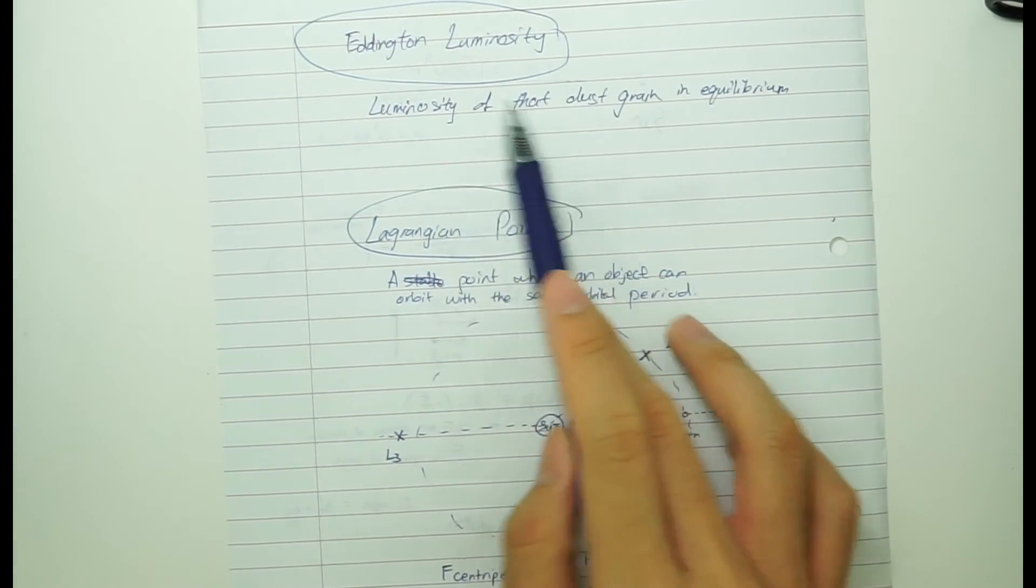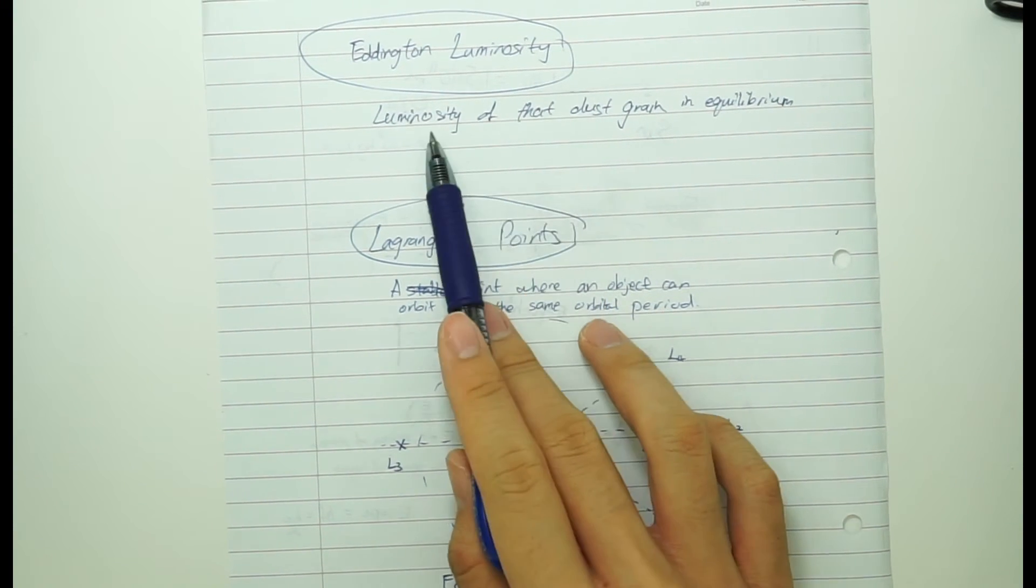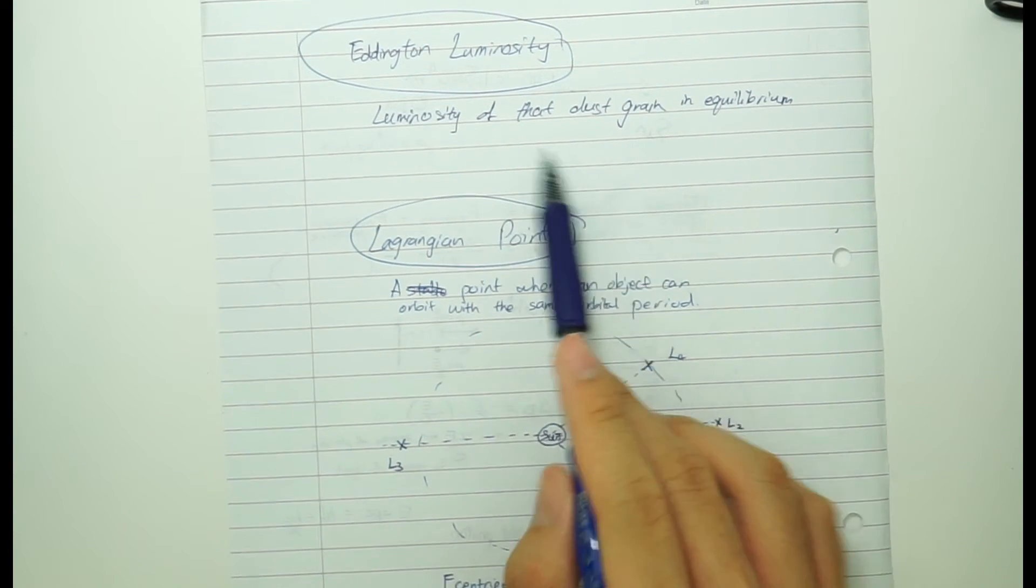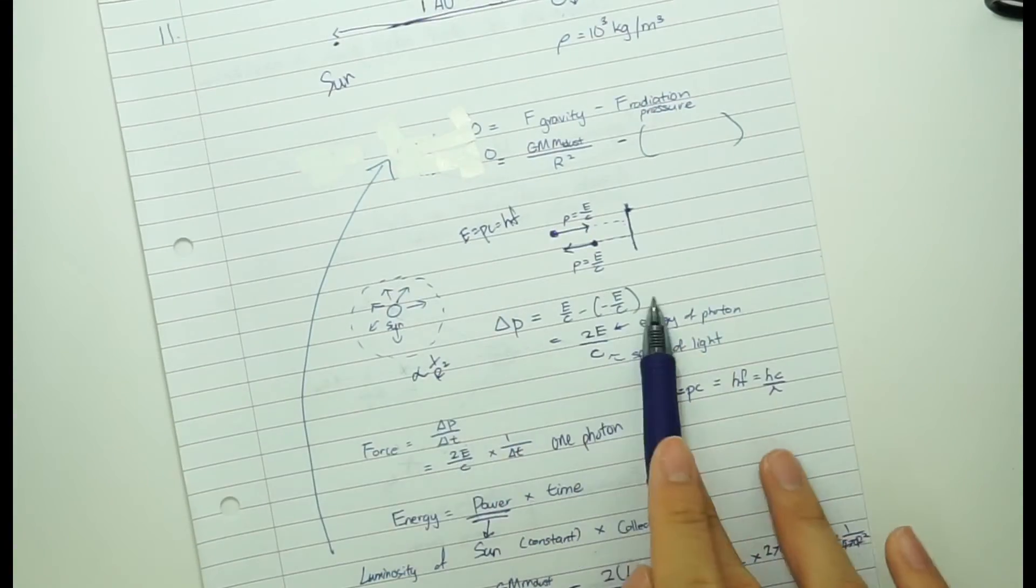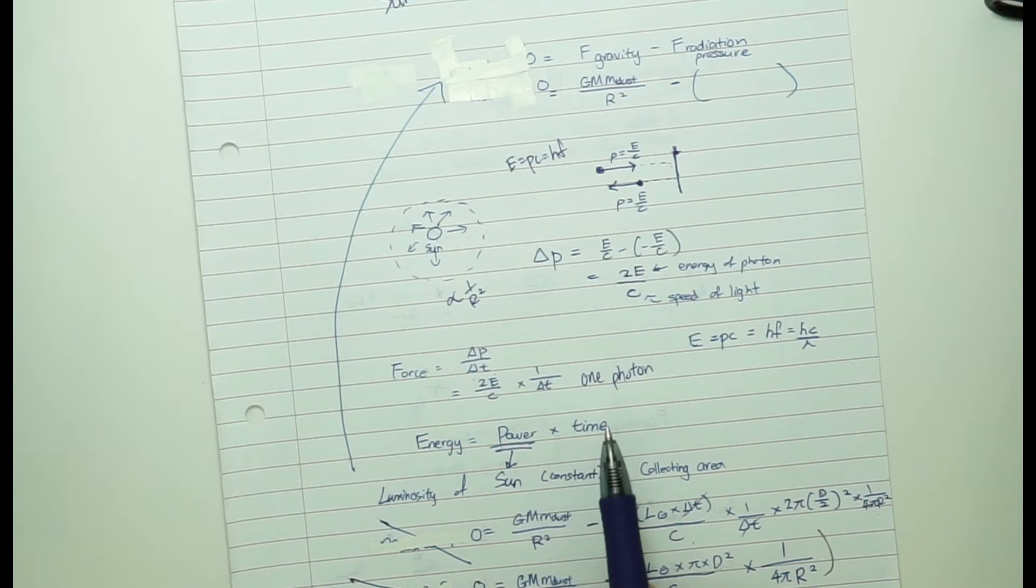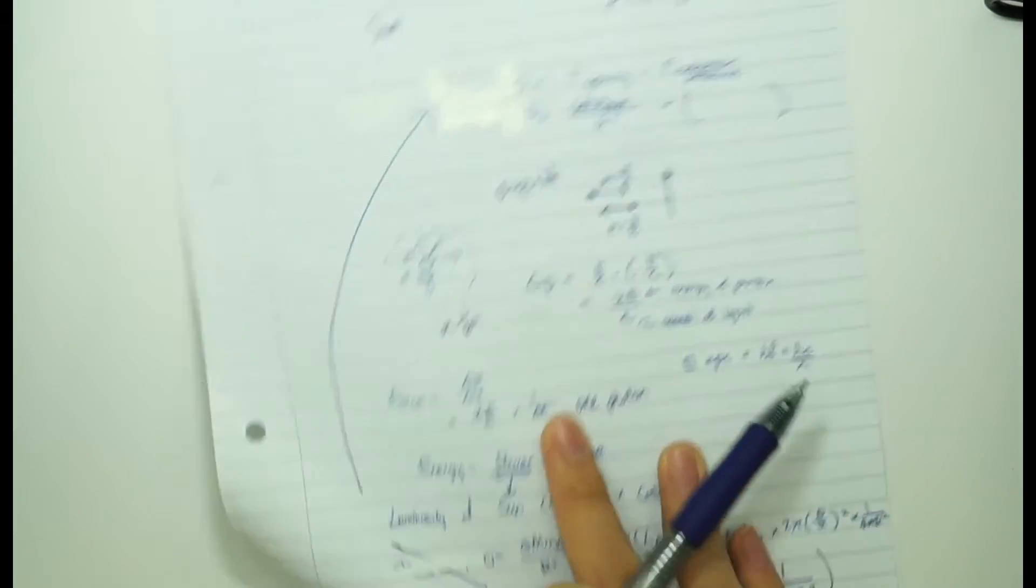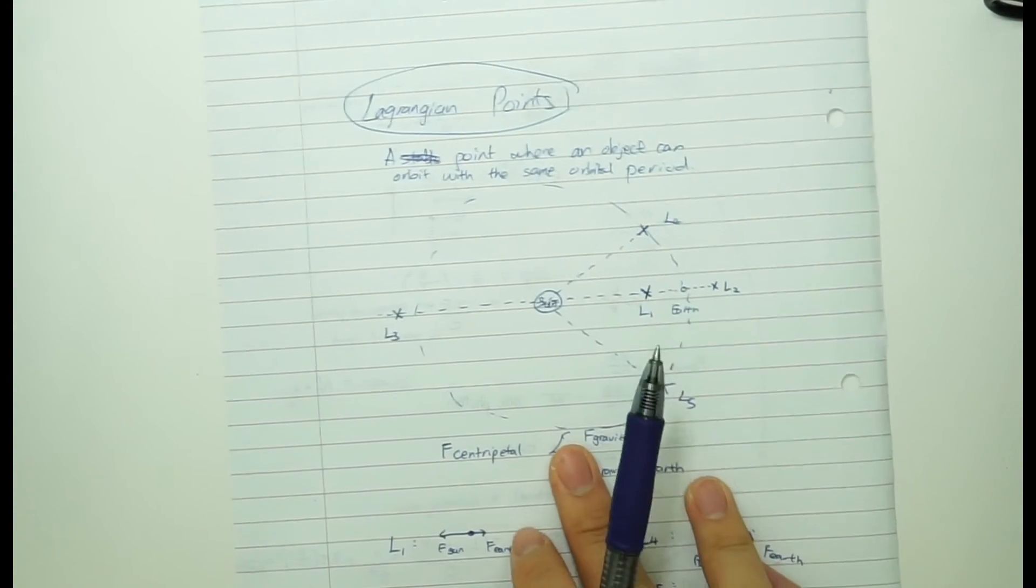So basically what this leads into is the concept of Eddington luminosity. So what this means is just that how bright is that dust grain that I just mentioned. So that's something you can calculate without having to use the momentum but using just the energy received by the sun. You can assume that all the energy is being absorbed and emitted by dust grain. So from there you can calculate its luminosity which is called Eddington luminosity.